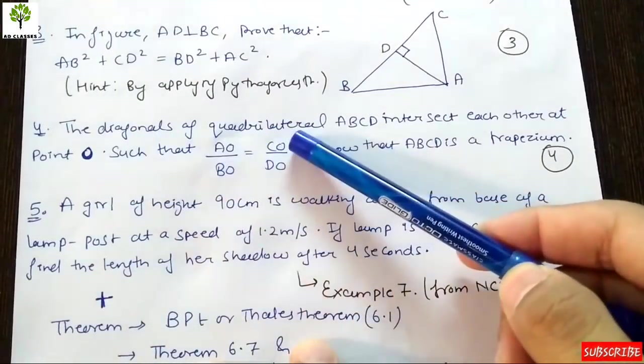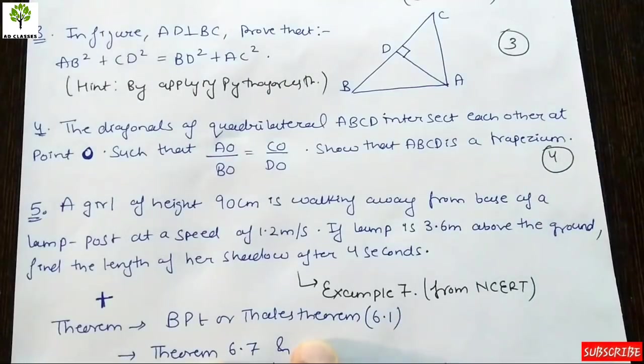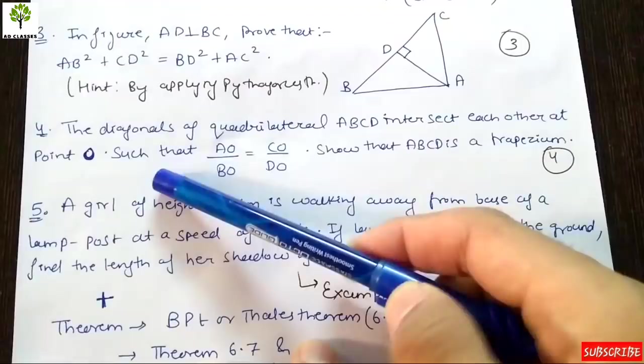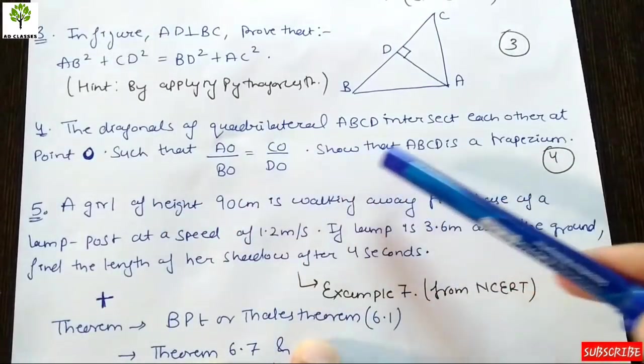The diagonals of quadrilateral ABCD intersect each other at point O.